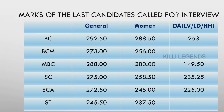SCI category is 272.5, 245 for women. ST is 245.5 for general, and for women it is 237.5. It is 248.5. There is a difference in the Differently Abled Category — 215, 255.5, 215.5, 255.5.